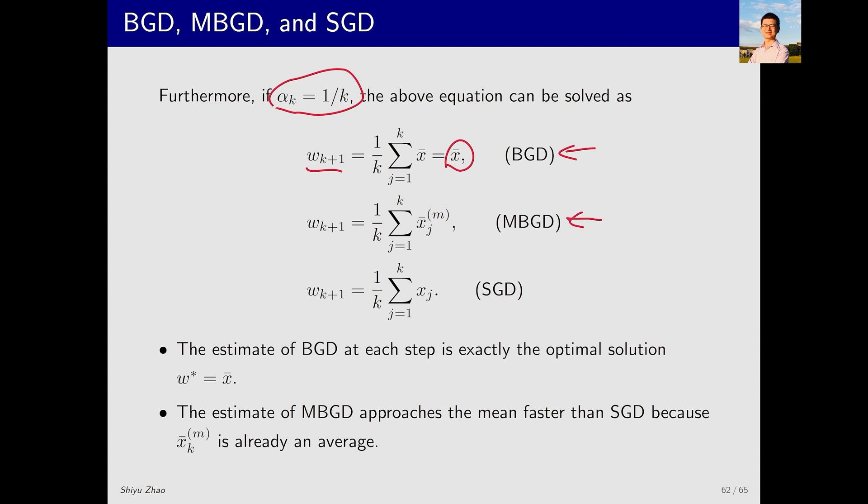For MBGD, the process is slightly slower but faster than SGD because it averages a subset of samples every time, and W_{k+1} is the average of all the summed samples. For SGD, the process is the slowest since it averages over single samples.